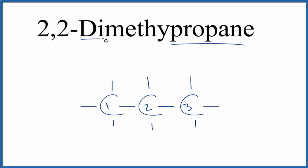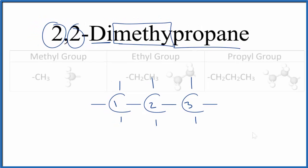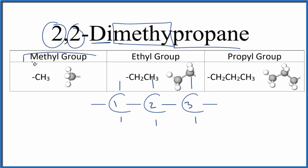Di means two. We're going to have two methyl groups on the propane and they'll be on the second carbon, both of them. 2,2-dimethylpropane. Methyl groups look like this. The methyl group right here is just CH3. This will be attached to one of the carbons.